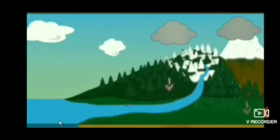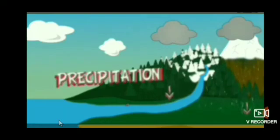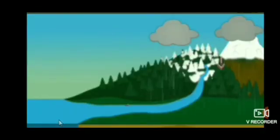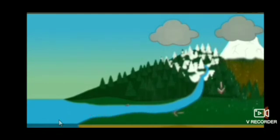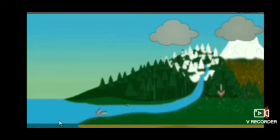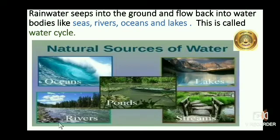Then at some point, they fall to the ground in the form of rain. This rainwater seeps into the ground. All this water must continue its long journey, covering large distances, and finally reaches the sea. This rainwater seeps into the ground and flows back into water bodies like seas, rivers, oceans and lakes. This is called the water cycle.